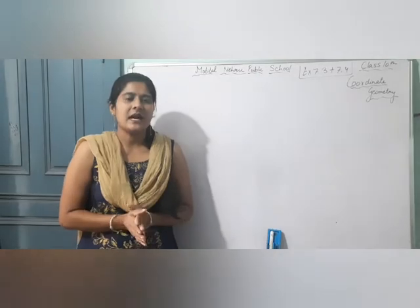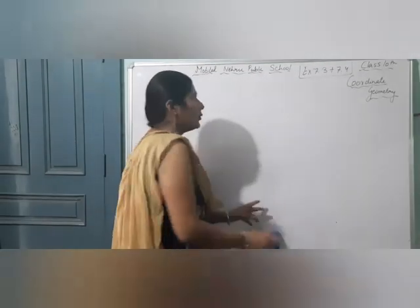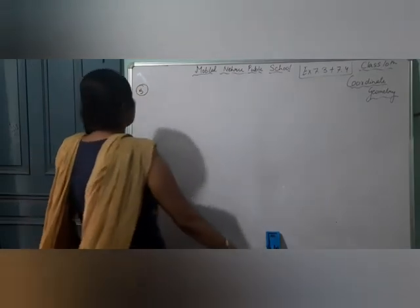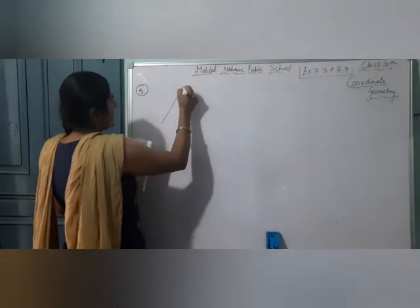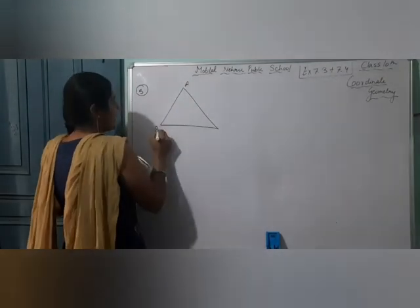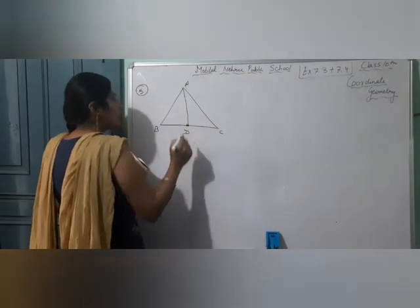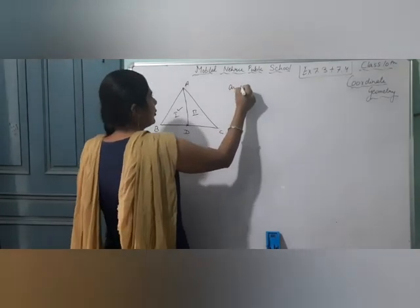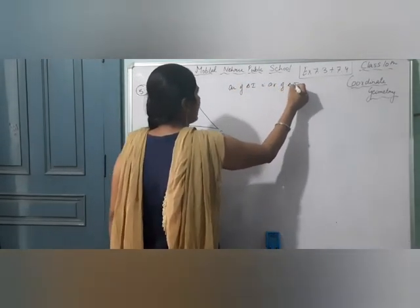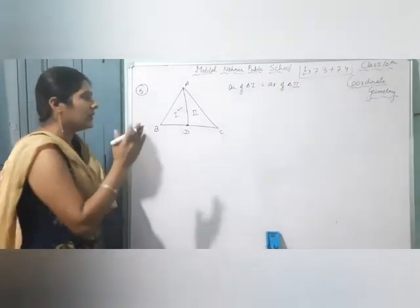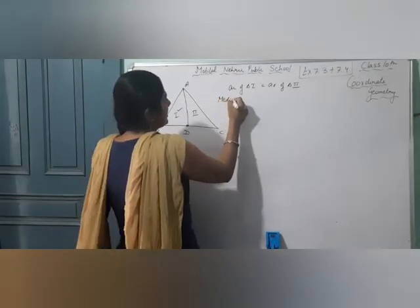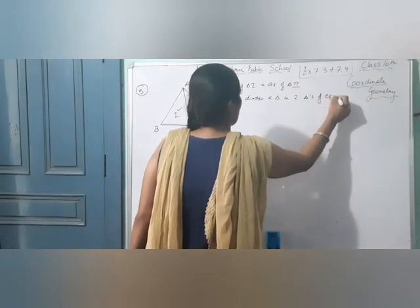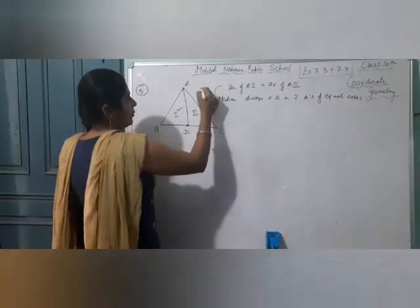Good morning students, today we will discuss the last question of Exercise 7.3 and then move to Exercise 7.4 (optional). Question 5: you have studied in Class 9 that a median of a triangle — if AD is the median of triangle ABC — then the median divides a triangle into 2 triangles of equal areas. We know that, and now we have to verify this result.